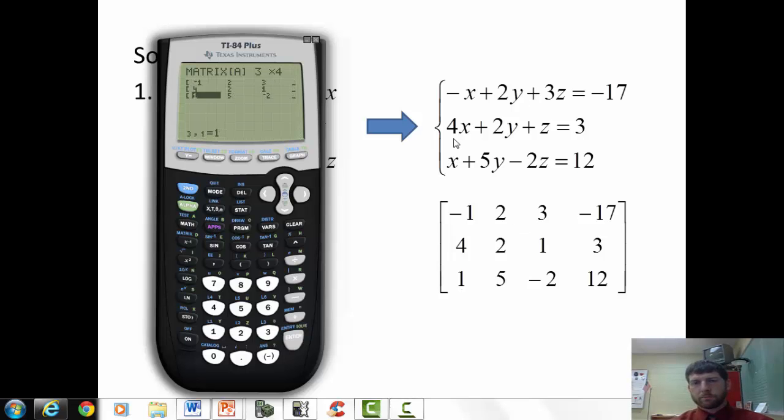So we just took the numbers, the coefficients and the constants, and just typed them into a matrix. So, after we matrix edit, we're going to second quit. So, second mode.